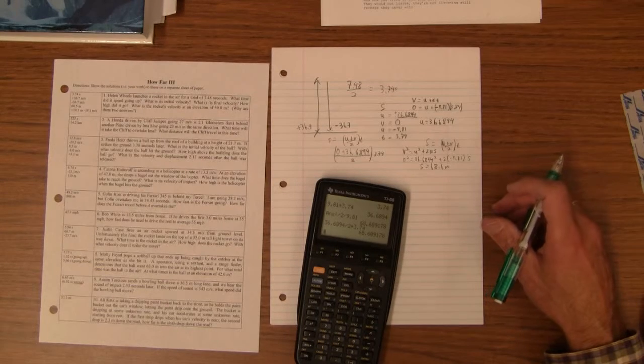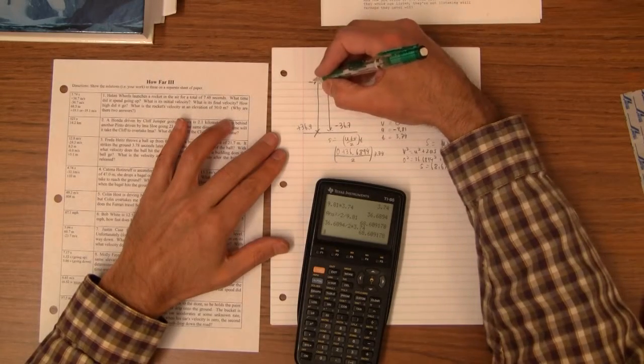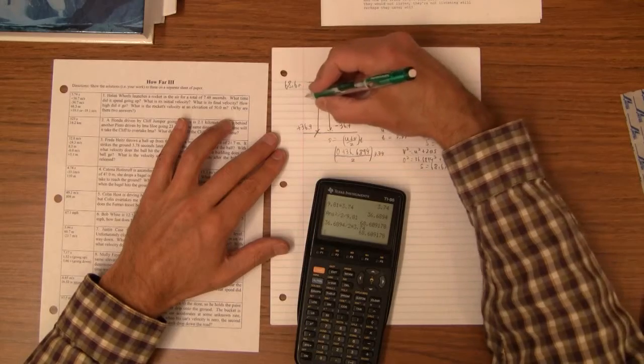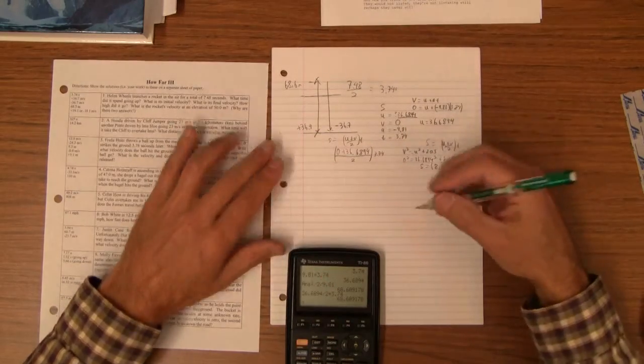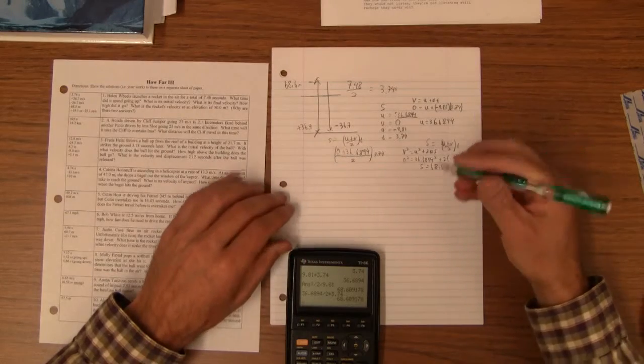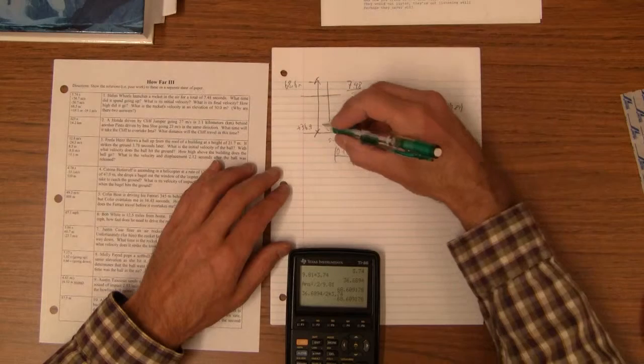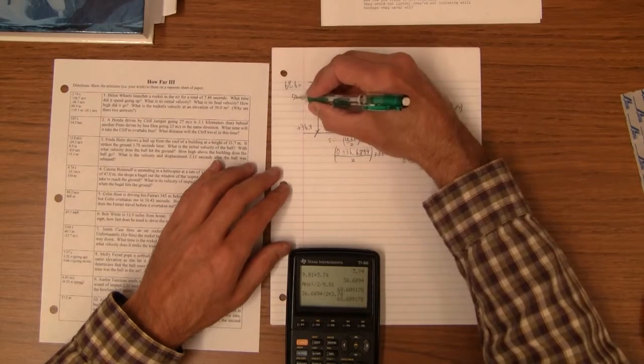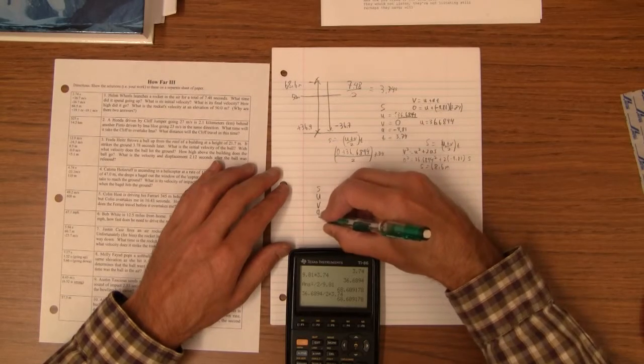And then the final one is at an elevation of 50 meters. This elevation here is 68.6 meters. So 50 meters is here. What is its velocity at an elevation of 50 meters? Now, we have to SUVAT again. We're not going to go from the ground to the top, we're going to go from the ground to 50 meters.